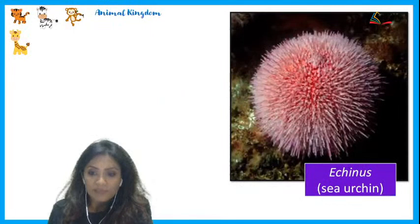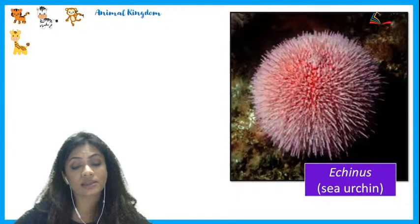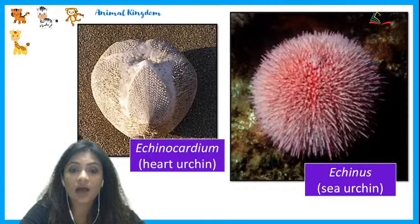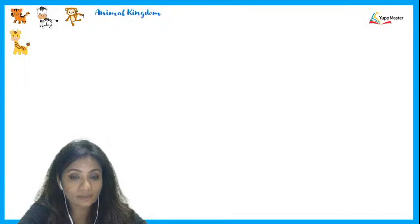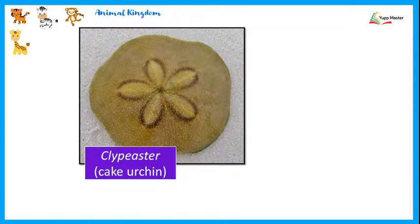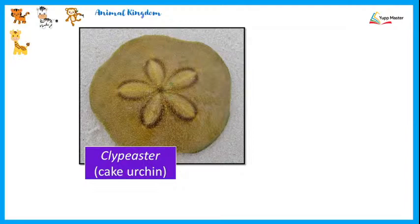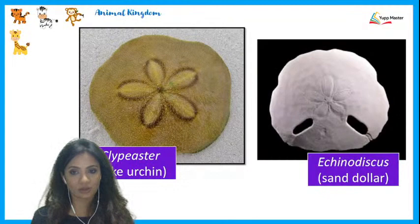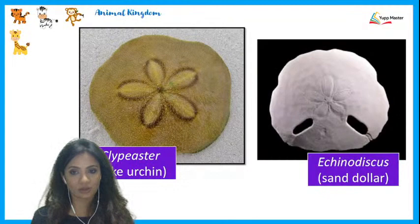Examples in Echinoidea: Echinus (sea urchin), Echinocardium (heart urchin — heart-shaped), Clypeaster (cake urchin), and Echinodiscus (sand dollar — discoid shaped).